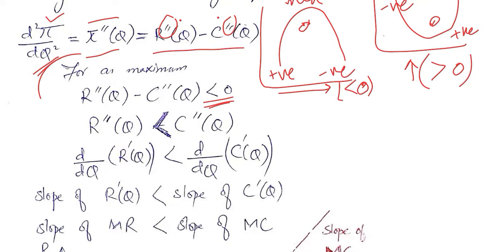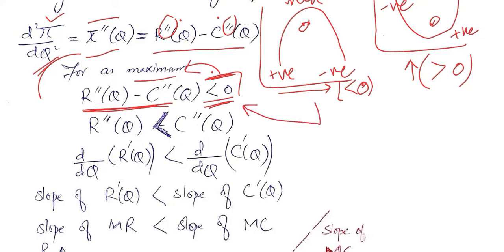We set the second order derivative to be negative, which leads us to a maximum — in this case, profit maximization. Shifting C''(Q) to the other side makes it a positive value, and we are left with the expression: π''(Q) < 0, which means R''(Q) < C''(Q).